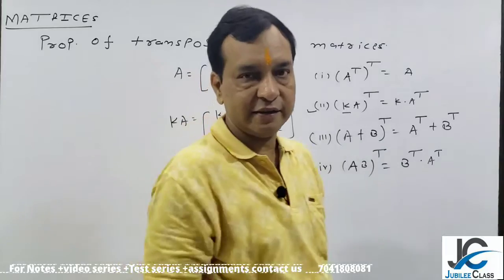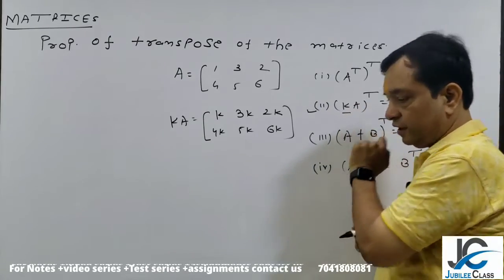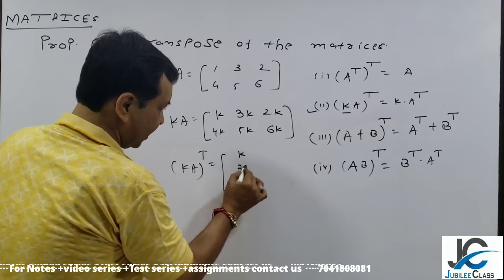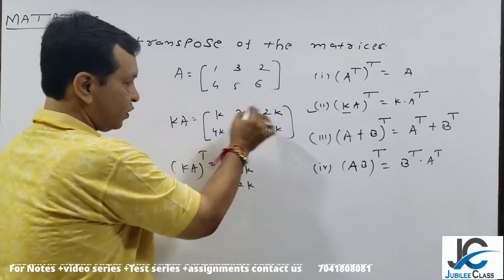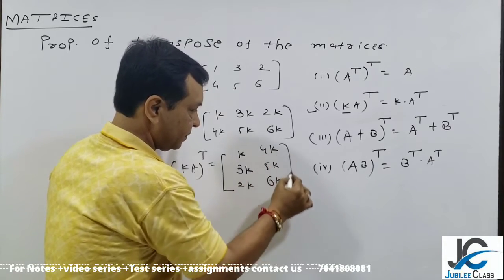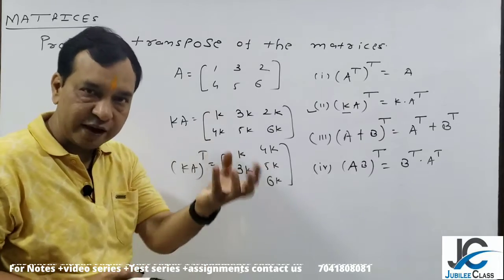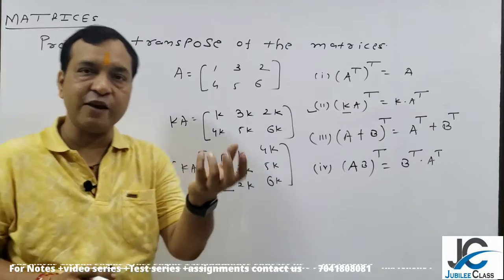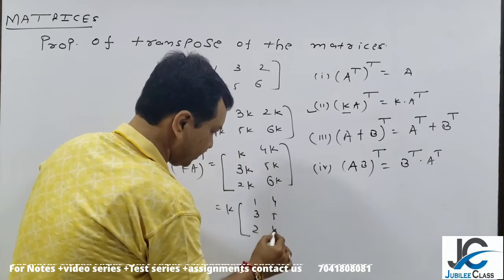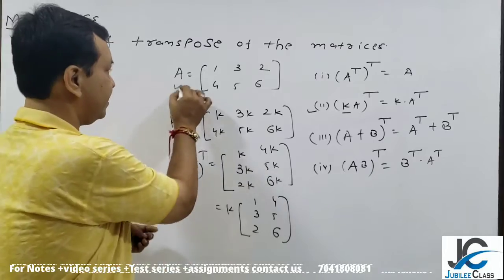Now, here I am taking transpose. So you know what happens. It's very simple. First row converts to first column. Second row converts to second column. So [K, 3K, 2K; 4K, 5K, 6K]. The terms are the same. Do you have K common? Yes or no? So I take K common. So we get K times [1, 3, 2; 4, 5, 6]. This is K times A^T. So this is the value.